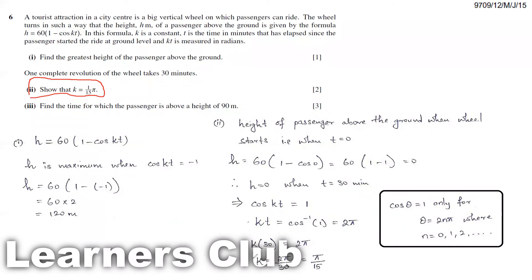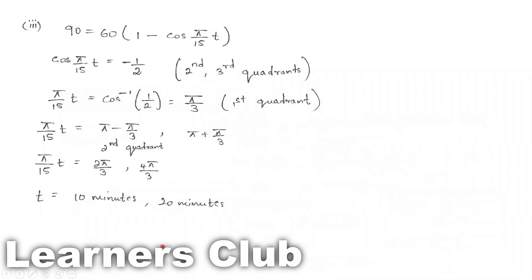Now that we know the k value, we can continue the next part. The next part says find the time for which the passenger is above a height 90 meters. That means when this value is 90, we need to find the time. Now we know the value of k, so it's easier for us to find the value.